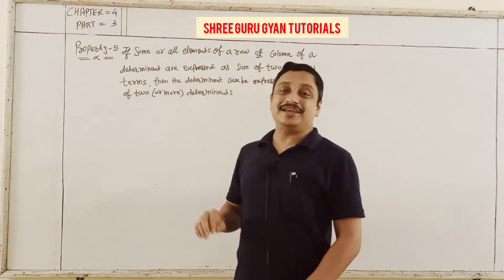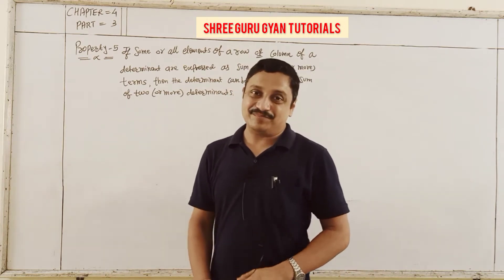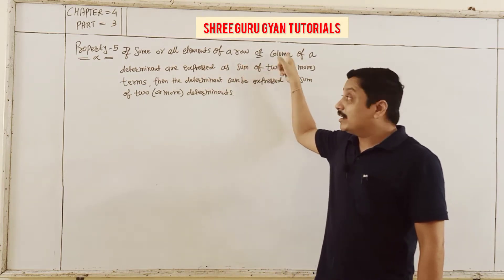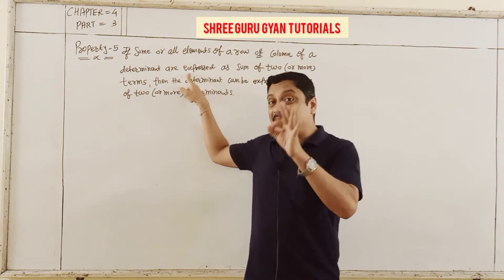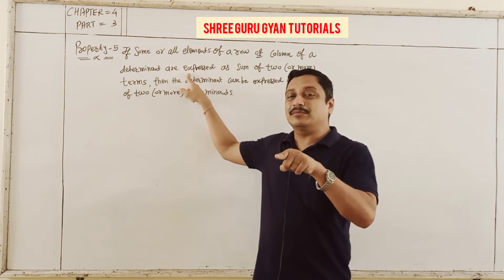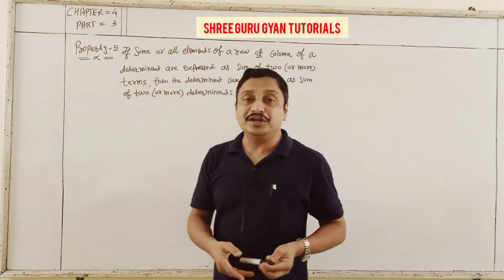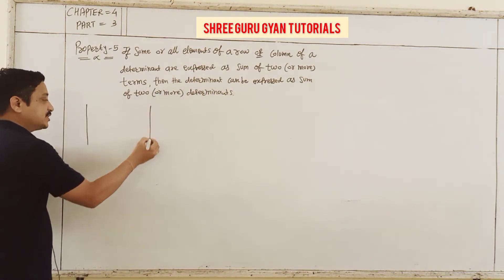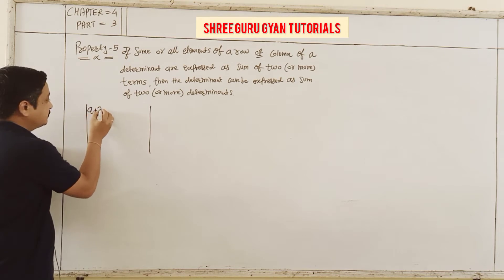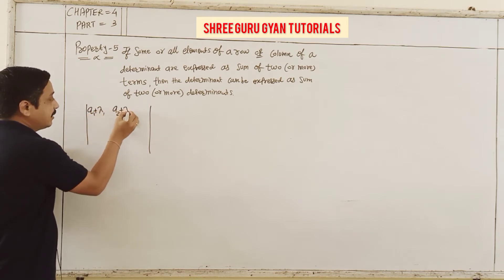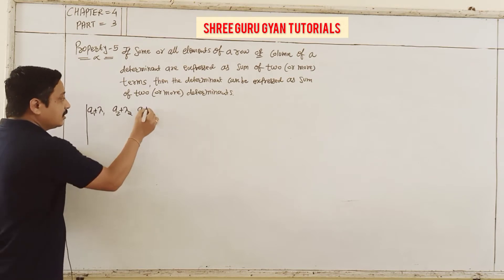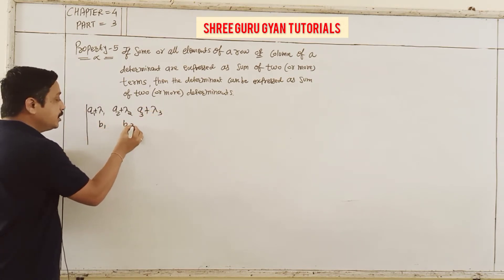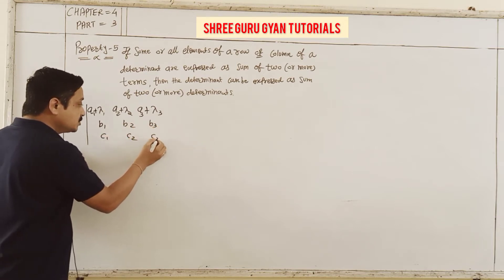Now we are running to property number 5. In property 5, if some elements of a row or a column are expressed as the sum of parts, we can express the determinant as two or more determinants. For example, consider the determinant with first row: A1 plus lambda1, A2 plus lambda2, A3 plus lambda3, and other rows b1, b2, b3 and c1, c2, c3.